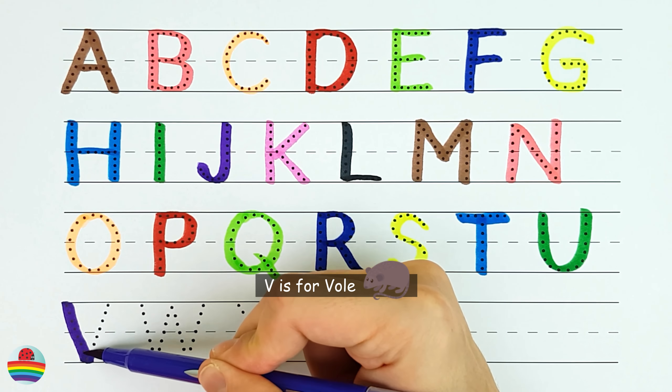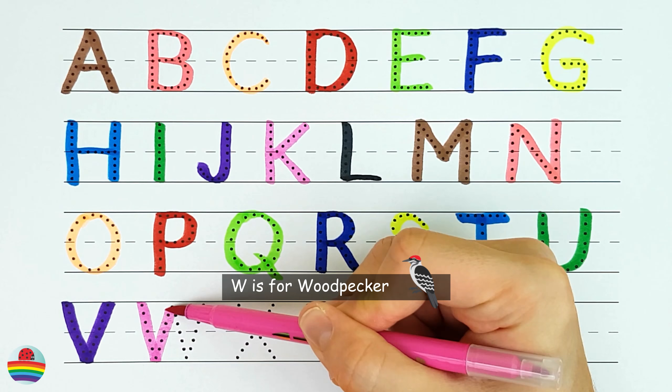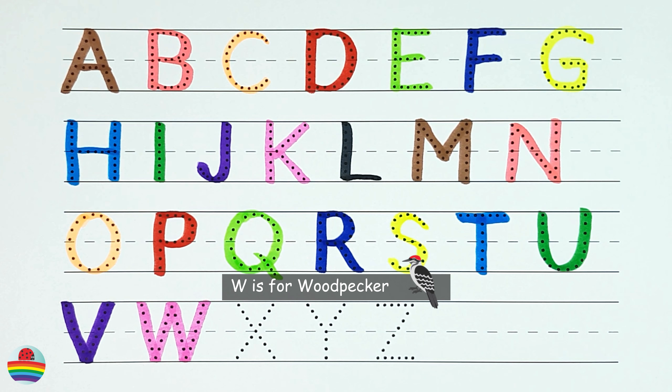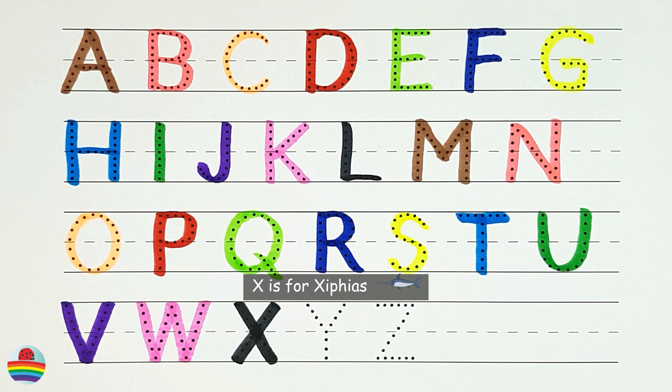V. V is for vulture. V. W. W is for woodpecker. W. X. X is for xiphias. X.